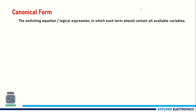Suppose the expression is f(a, b) = a + āb. In this expression, the first term 'a' does not contain b, while the second term 'āb' has both a and b. This kind of expression is called a non-canonical form expression, and we need to convert such expressions into canonical form, which has its own advantages in digital circuit design.